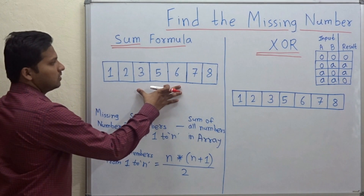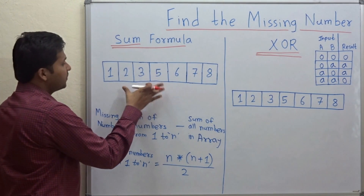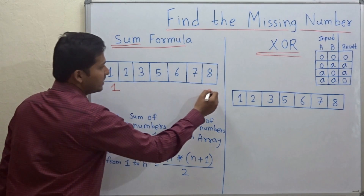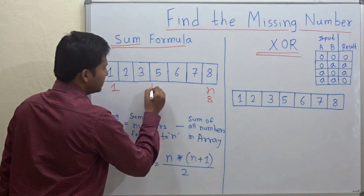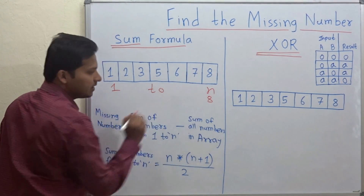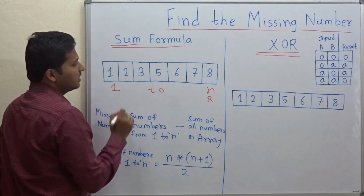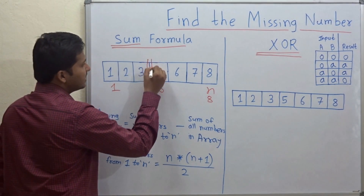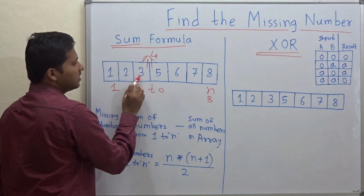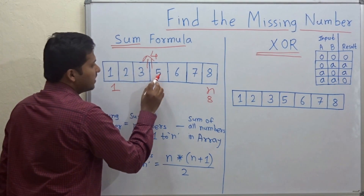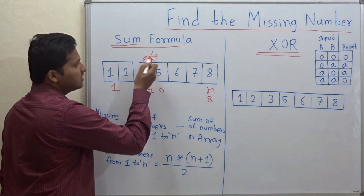This is the array and it consists of the numbers from 1 to n. So n is 8 here, meaning 1 to 8. Now there is a missing number in this array and that missing number is 4. We have 1, 2, 3 and then 5, 6, 7, 8 — clearly the missing number is 4.